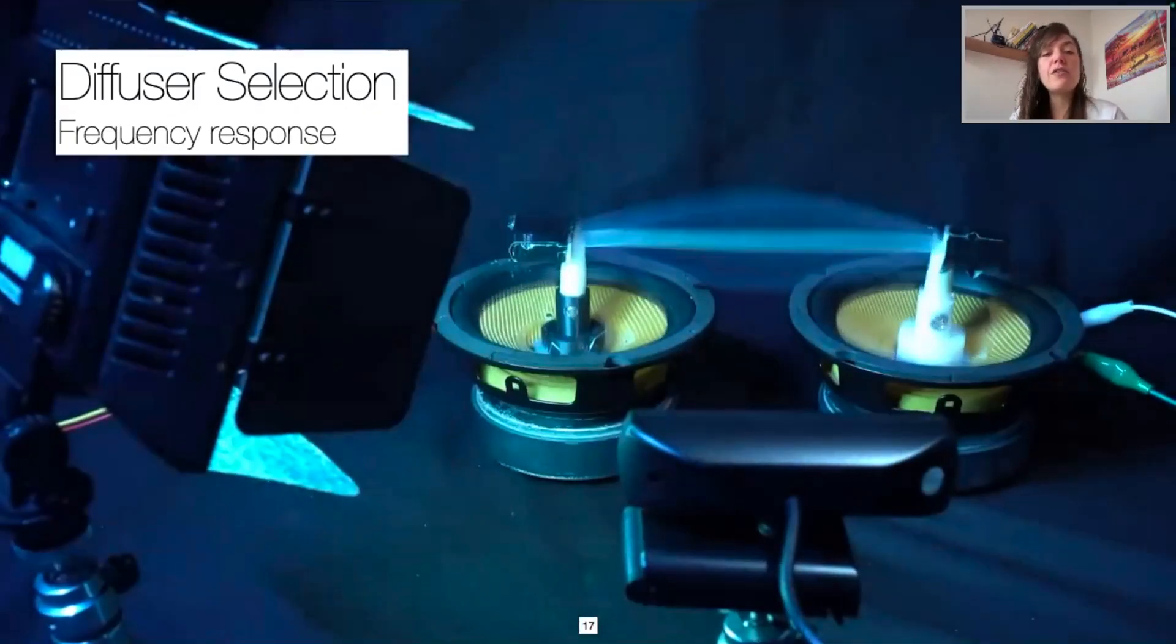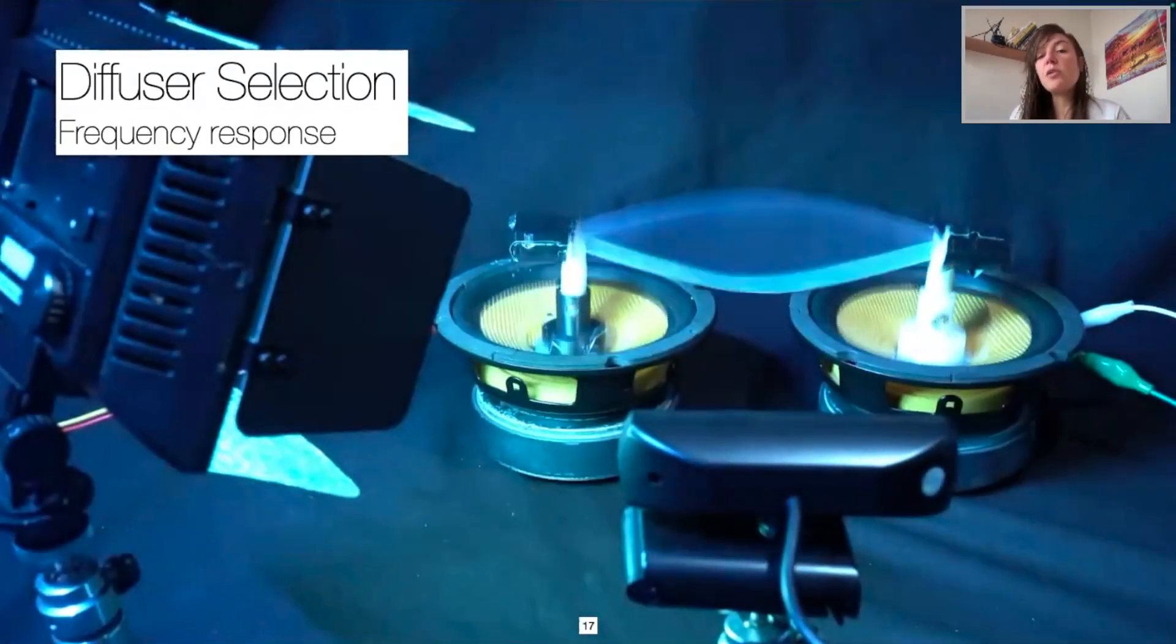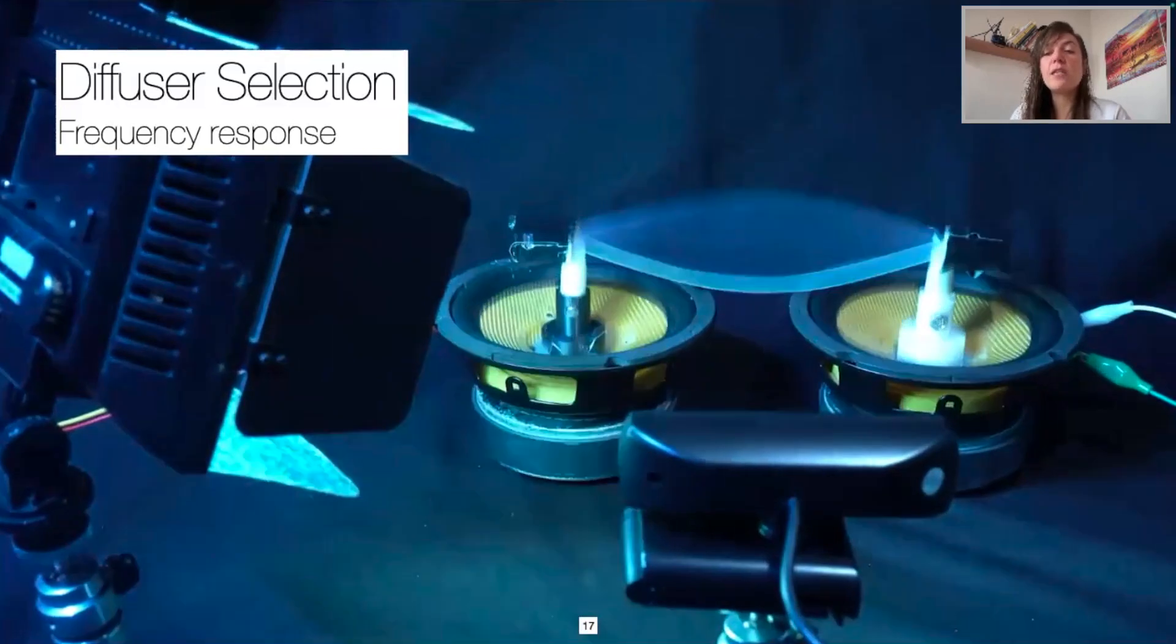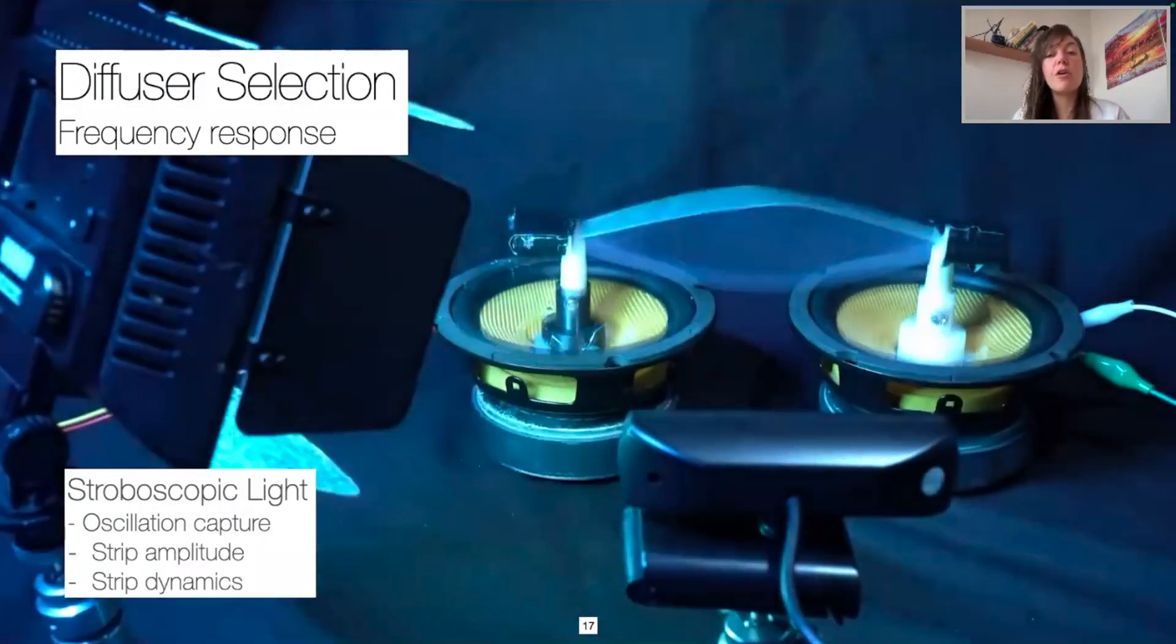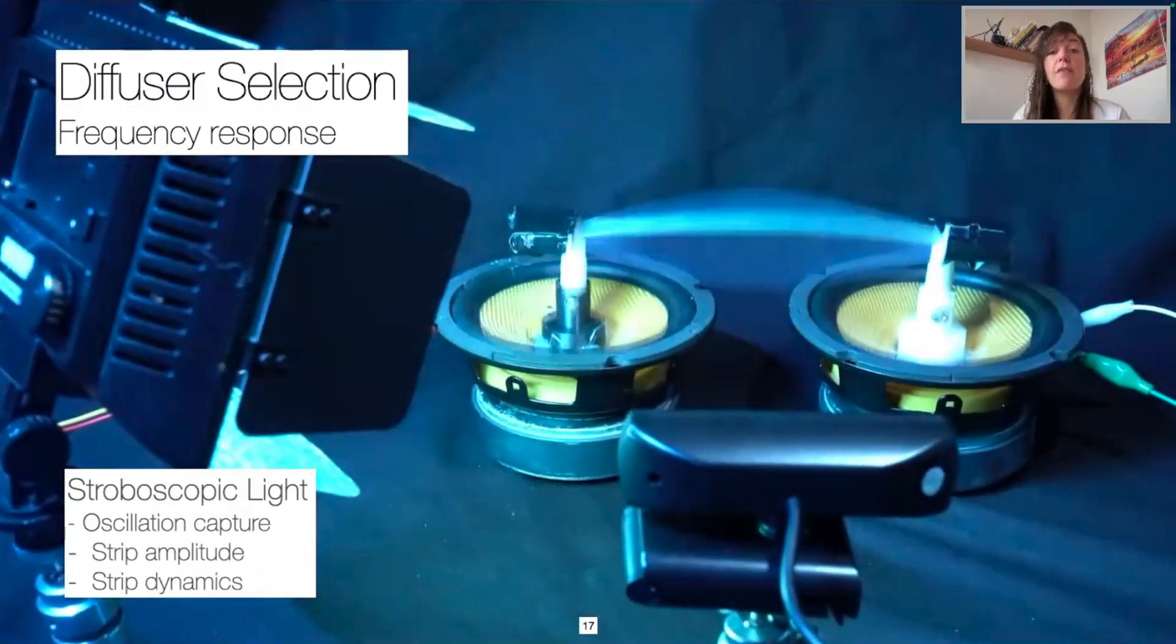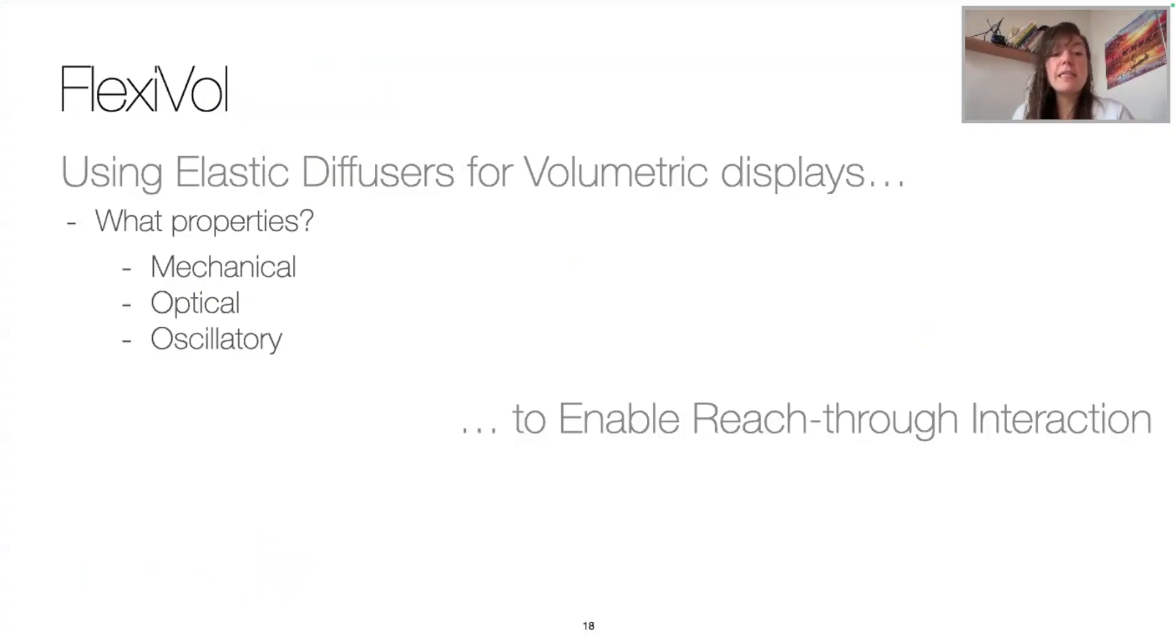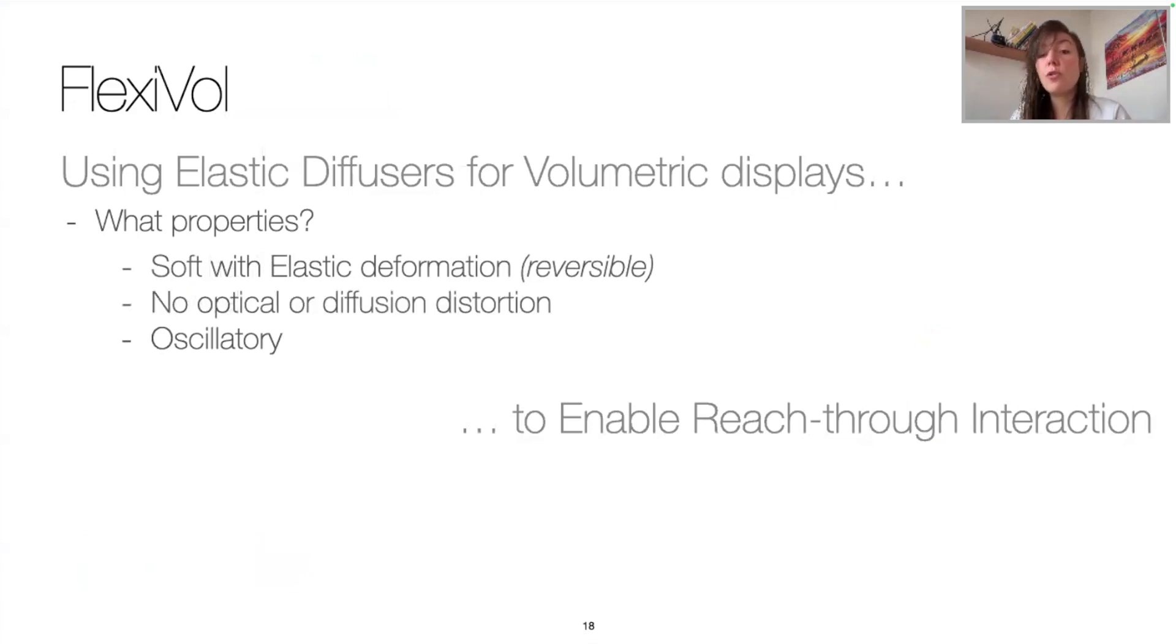Finally, we characterized the frequency responses. We placed our samples between two speakers and increased their frequency up to resonance. We synchronized a strobo light to enable the capture of the oscillation at a regular frame rate and observed the amplitude and dynamics of the strips. So after characterizing the samples, we defined our guidelines as the diffuser should be soft. Nonetheless, its deformation should remain elastic. Its optical diffusion should not provide any distortion nor blur to the image. And its resonance should be different from the system's resonance frequency to avoid large amplitudes provoking graphic distortions. So we selected elastic bands, but more details are available in the paper.